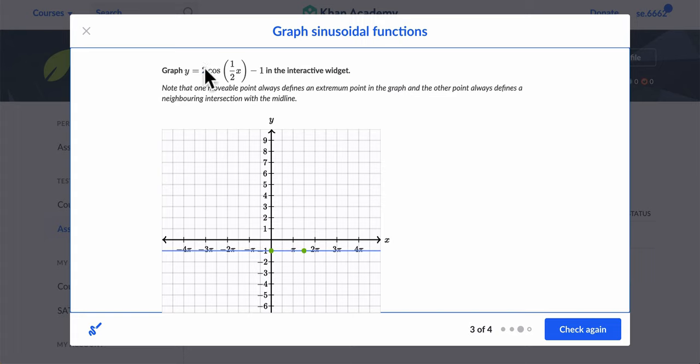That becomes really important, because in the cosine function right here, the amplitude is 2, my midline's at negative 1, okay. So I might leave this point here and leave it as the midline, but then when I try and make a cosine function with this extremum,